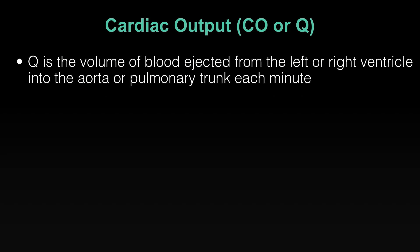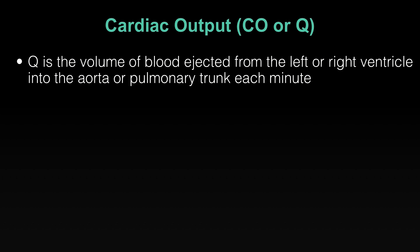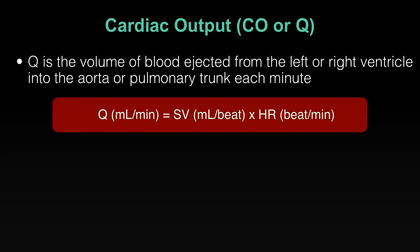Cardiac output is the total amount of blood ejected from the left or right ventricle into the aorta or pulmonary trunk, depending on which ventricle you're talking about. The same amount of blood is ejected from both the left and the right sides. We express it as a rate — liters of blood per minute or milliliters of blood per minute.